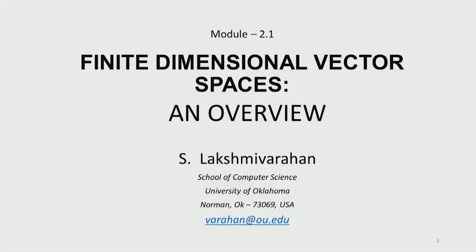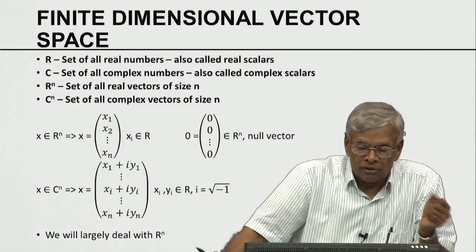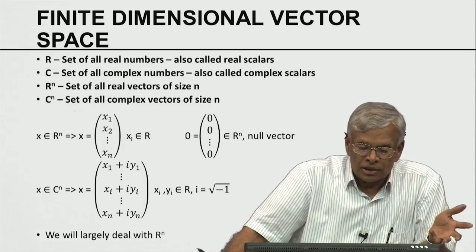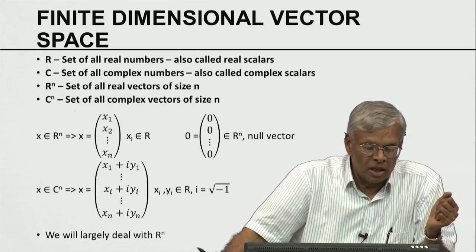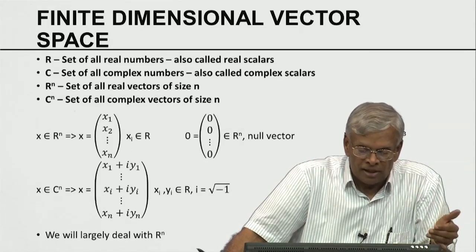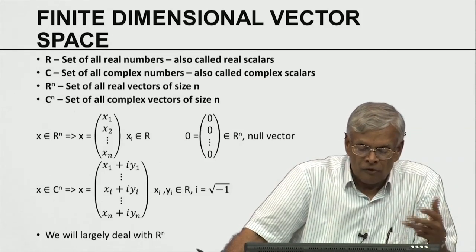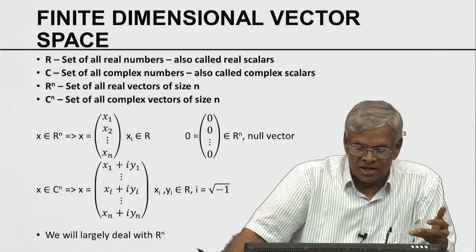We will start with a quick review of fundamental principles from finite dimensional vector spaces, and use this module to set up all our notations and basic concepts. R is the set of real numbers, also called real scalars. C is the set of complex numbers, called complex scalars. R^n refers to the set of all real vectors of size n. C^n is the set of all complex vectors of size n.